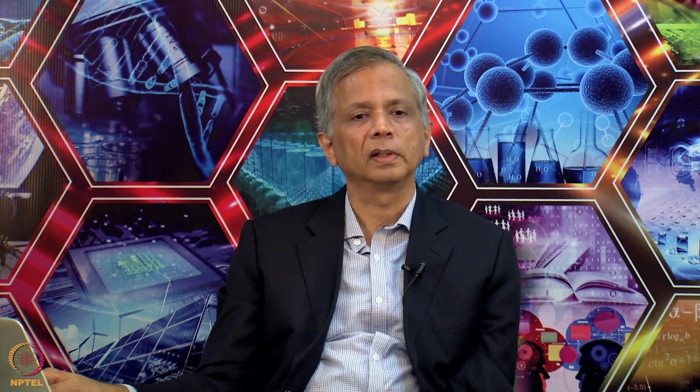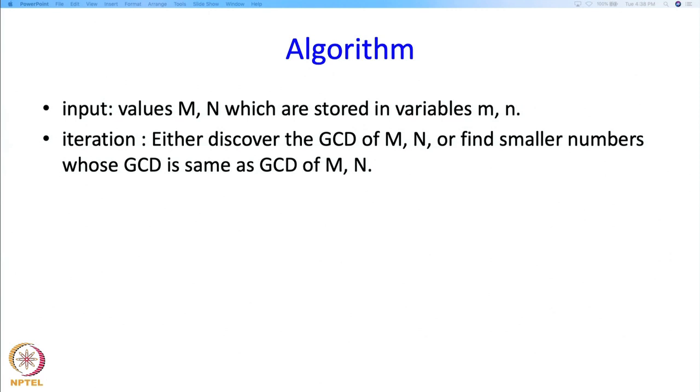So what is the algorithm? So input are values M and N which are stored in variables m and n, little m and little n. And in each iteration we will either discover the GCD of M and N, so that will happen if the larger number is perfectly divided by the smaller number or we will find smaller numbers whose GCD is the same as the GCD of M and N.